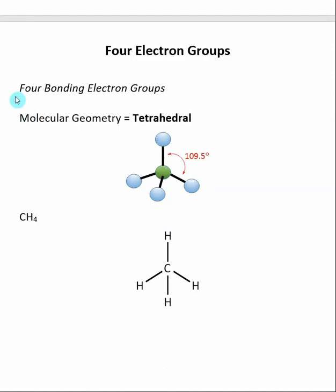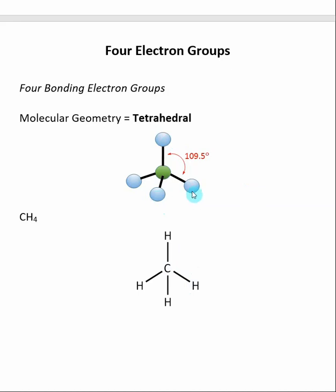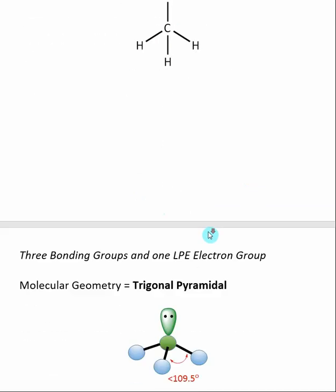When we have four groups of electrons and all four are bonding, the molecular geometry is called tetrahedral. The classic example is CH4, methane. This is a 3D molecule, and the bond angles can be a little difficult to see on a 2D page. But in a truly tetrahedral molecule, the bond angle is 109.5 degrees. The hydrogen-carbon-hydrogen bond angle is 109.5 degrees — even if it may not look that way when drawn on a 2D plane.